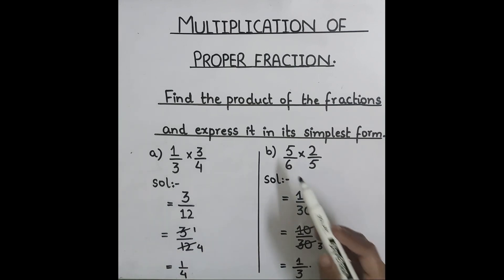Question number two: five over six multiply by two over five. Five times two is ten and six times five is thirty. Ten one times ten and ten three times thirty. So, one over three is the simplest answer.